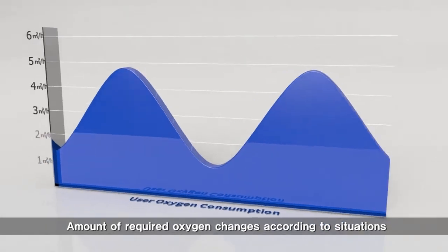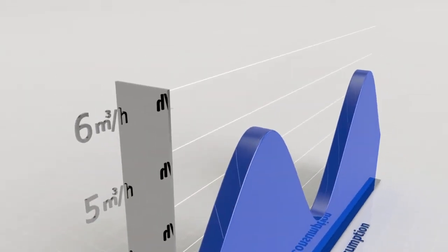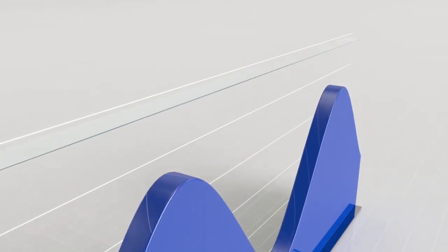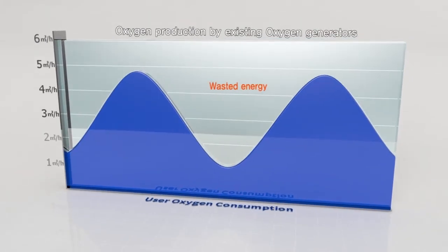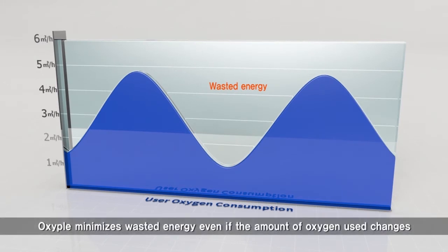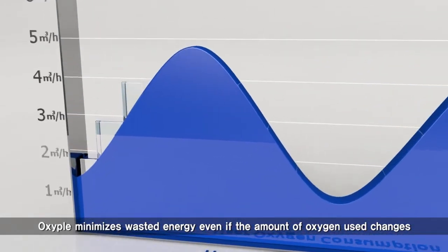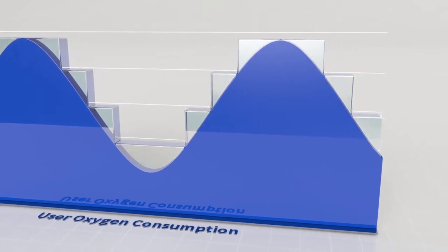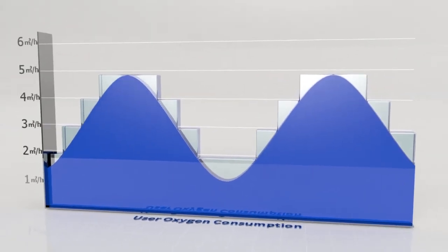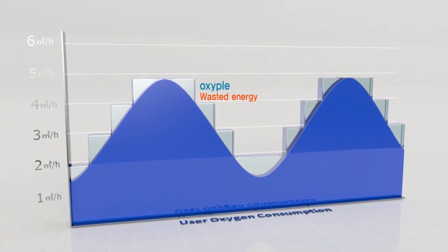The amount of required oxygen changes according to situations. Previous oxygen generators uniformly produced oxygen according to given capacity, therefore producing wasted oxygen. The Oxypole minimizes wasted energy even if the amount of oxygen use changes, thanks to its proportional control function according to amount of usage, as well as its modular product structure — unique strengths of the Oxypole.